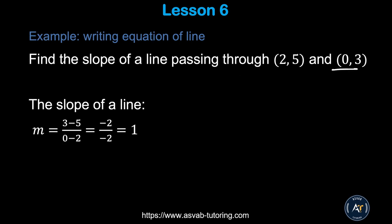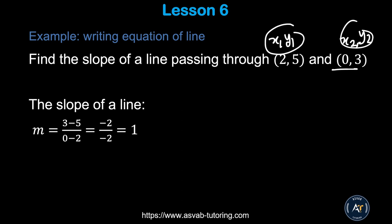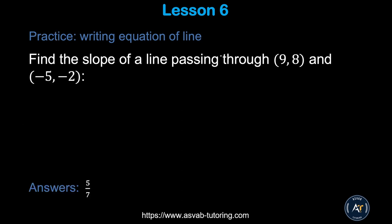Let's apply this formula: find the slope of a line passing through (2, 5) and (0, 3). Label them x₁, y₁, x₂, y₂. Plugging into the formula gives (3 − 5) / (0 − 2) = −2 / −2 = 1. So m = 1. Now try the next problem by yourself using the same formula.